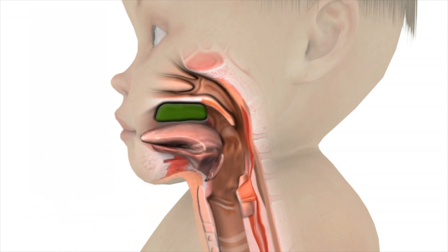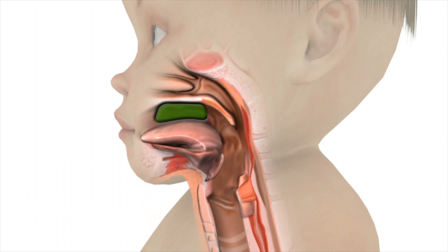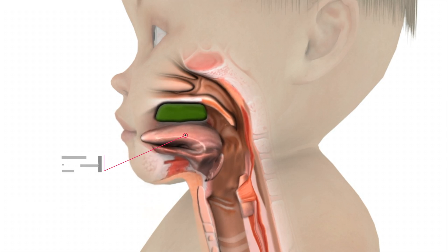During the oral preparatory stage, food is kept in the front part of the mouth where it is moistened with saliva and chewed into a softer consistency.